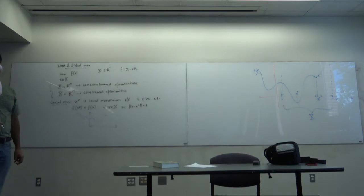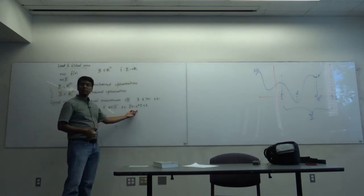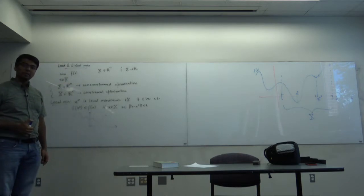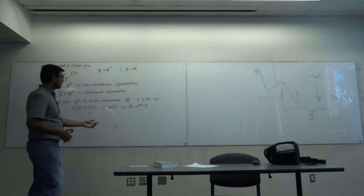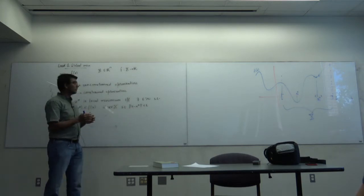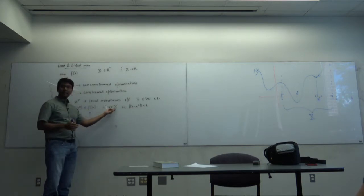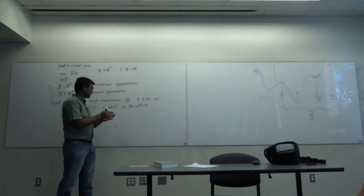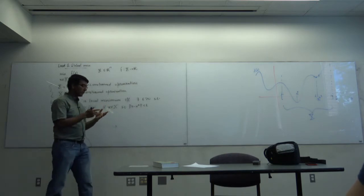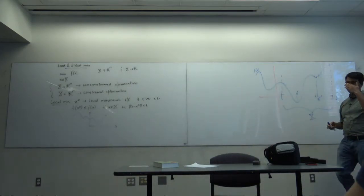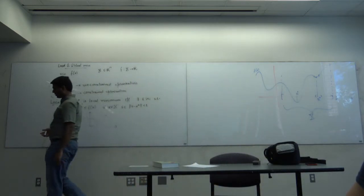In the local minimum definition, the open ball around x* is captured by the choice of epsilon. You pick a ball around x*, and it's not required that the entire ball be in the set X. So you look at the ball around x* intersected with the set X, and you want the function to achieve a minimum within that restricted set. That's the definition of a local minimum.